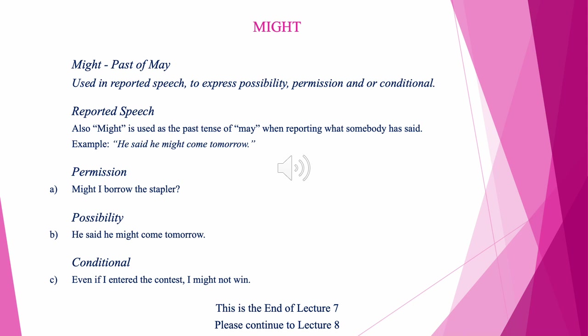Might — might is used as the past tense of may in reported speech to express possibility, permission, and conditional. Reported speech: He said he might come tomorrow. Permission: Might I borrow the stapler? Possibility: He said he might come tomorrow. Conditional: Even if I enter the contest, I might not win. This is the end of lecture 7. Please continue to lecture 8.